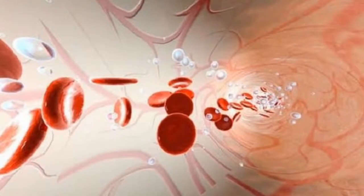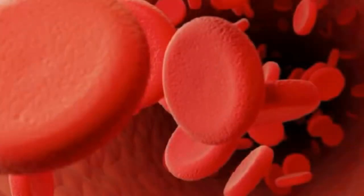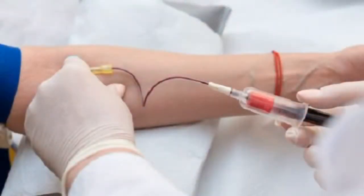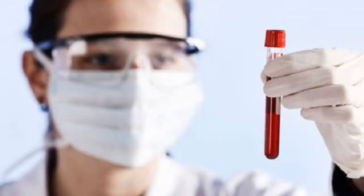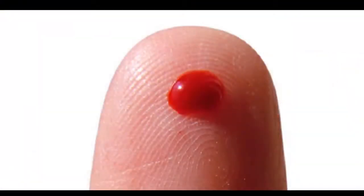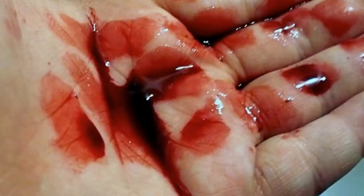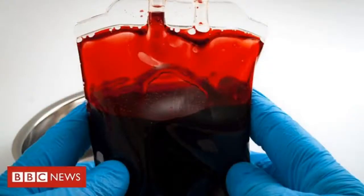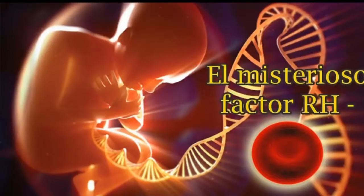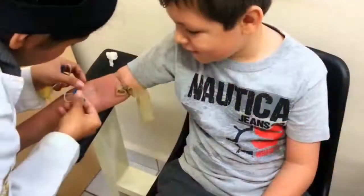En los pulmones abunda el oxígeno y se expulsa dióxido de carbono, un gas que disuelto en agua produce ácido carbónico. Esta expulsión hace que disminuya la cantidad de ácido carbónico, lo que también disminuye la acidez de la sangre. En cambio, en el resto de los órganos que consumen oxígeno, donde abunda mucho menos que en el pulmón, al mismo tiempo se genera dióxido de carbono en el metabolismo. Esto hace que al disolverse en el plasma sanguíneo, el gas genere ácido carbónico y la acidez de la sangre aumente.